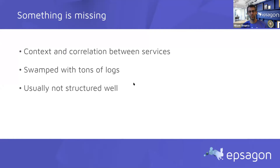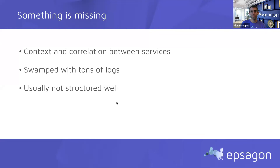The problem with logs is that you can't really get context between different logs of different services, because each log was written individually — logs are just not built to deal with distributed systems. Especially today when architectures are getting massive, with hundreds of microservices and billions of requests coming into the system, it's almost impossible to use logging to figure out what happened in a matter of minutes. The problem is really in the core of using logs — it's just not the right tool.